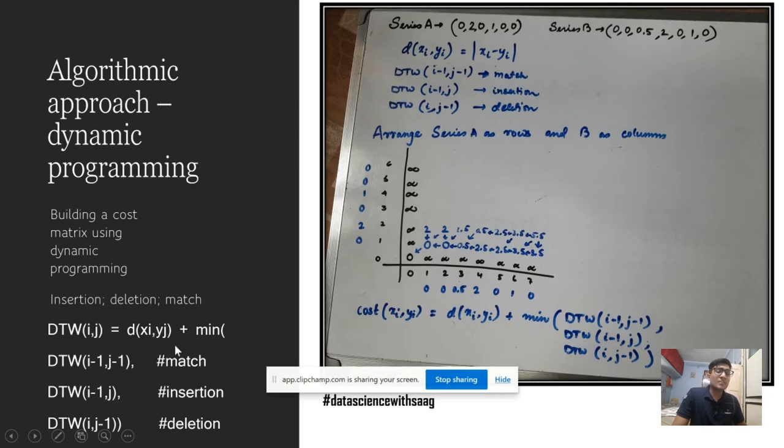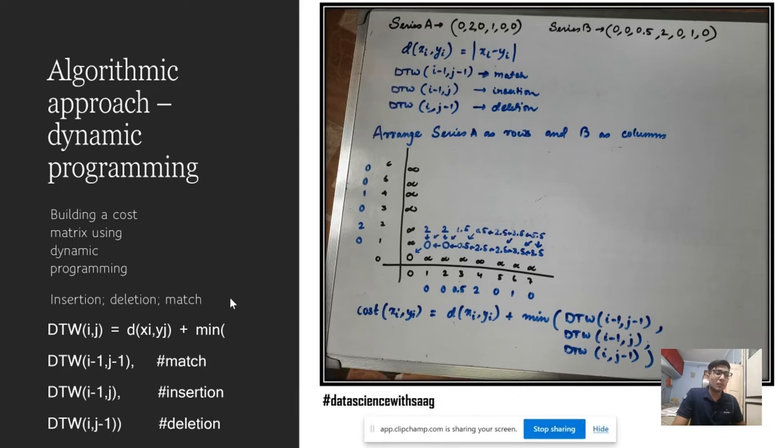One thing to understand here is the three operations that we talked about, match, insertion, and deletion, are represented in dynamic programming approach of DTW as DTW(i-1,j-1) denotes match, (i-1,j) denotes insertion, and (i,j-1) denotes deletion. So using this approach and building the cost matrix, I would advise you to fill this matrix yourself, pause the video here and then move on to the next slide which has the solution.